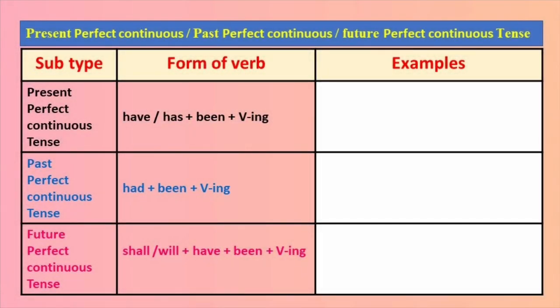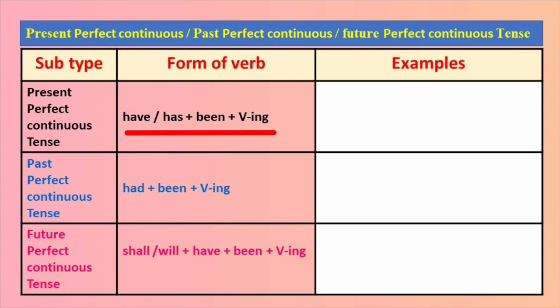Present Perfect Continuous Tense मधे Have किंवा Has + Been + V-ING हे रूप वापरतात. For example: Have / Has + Been + Looking.